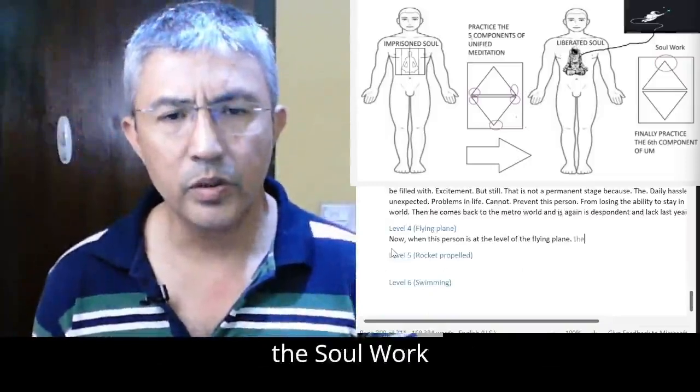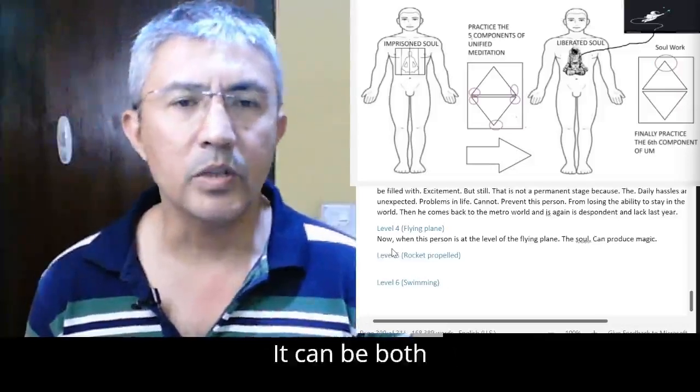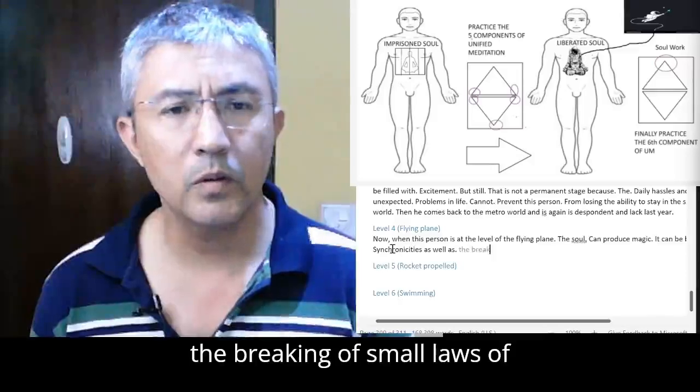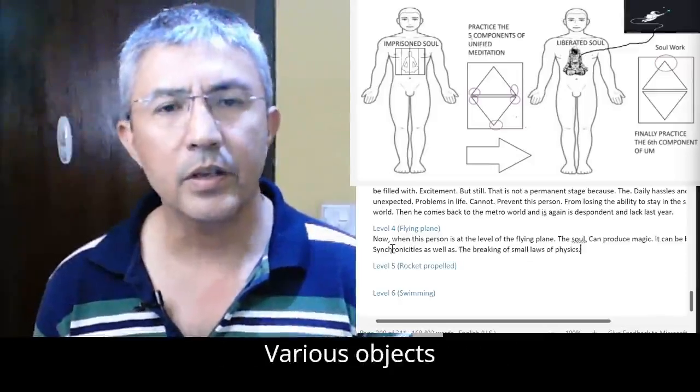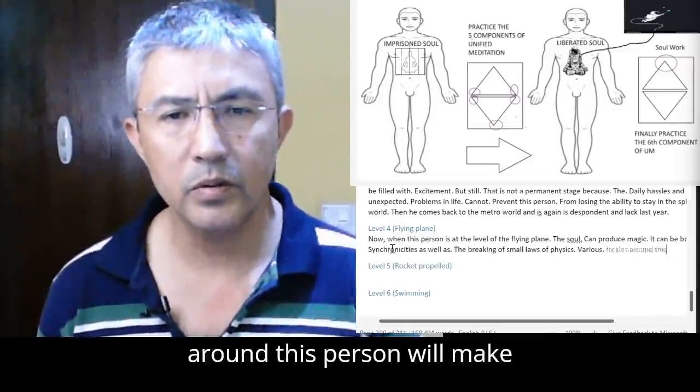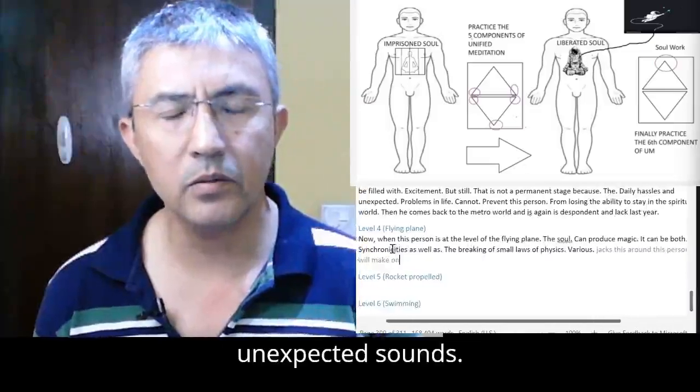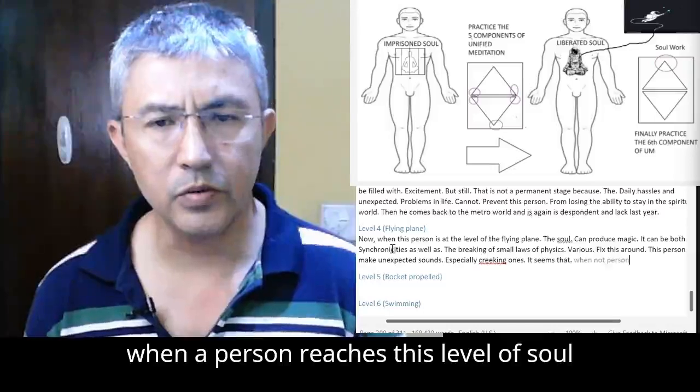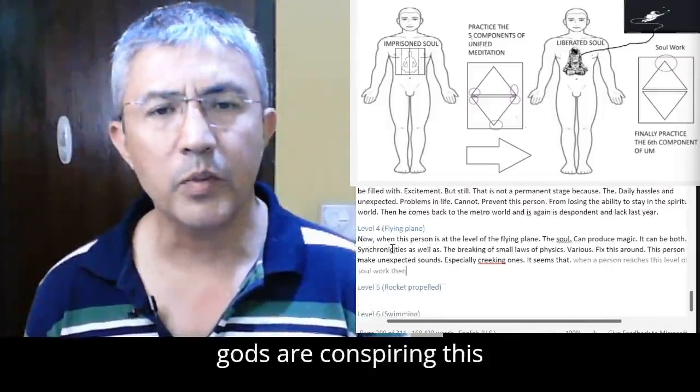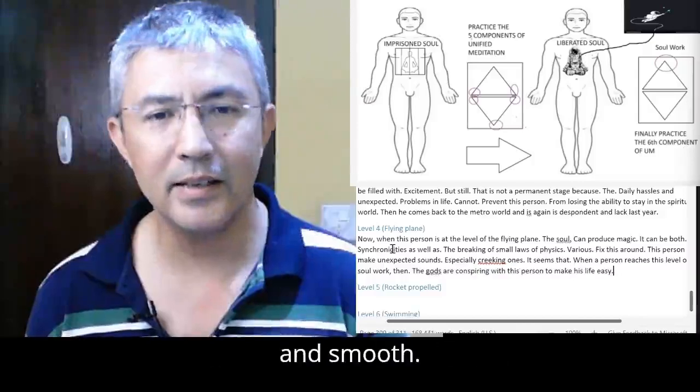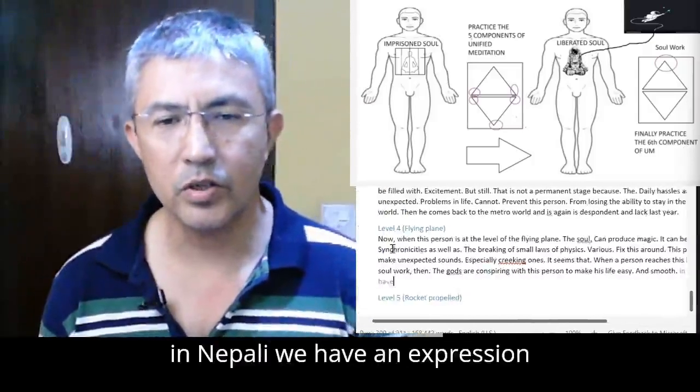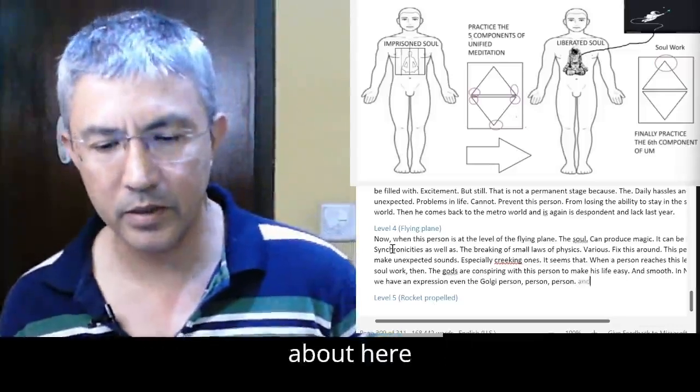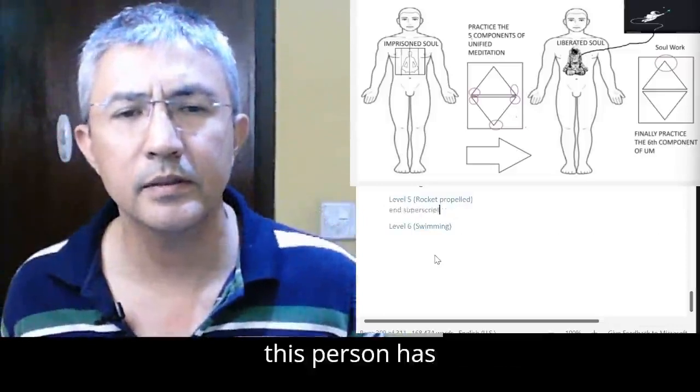Now when this person is at the level of the flying plane, the soul work can produce magic. It can be both synchronicities as well as the breaking of small laws of physics. Various basic objects around this person will make unexpected sounds, especially creaking ones. It seems that when a person reaches this level of soul work, then the gods are conspiring for this person to make his life easy and smooth. In Nepali we have an expression: even the ghosts are a slave to such a person. And this is the stage that I'm talking about here.